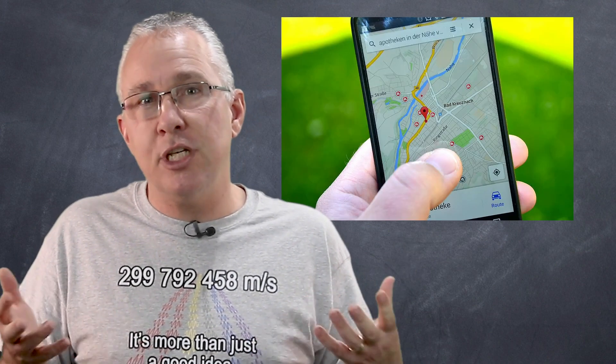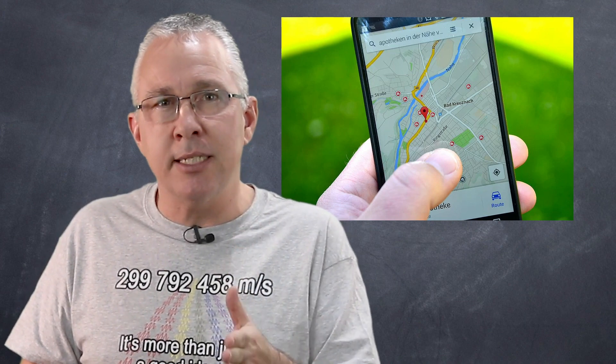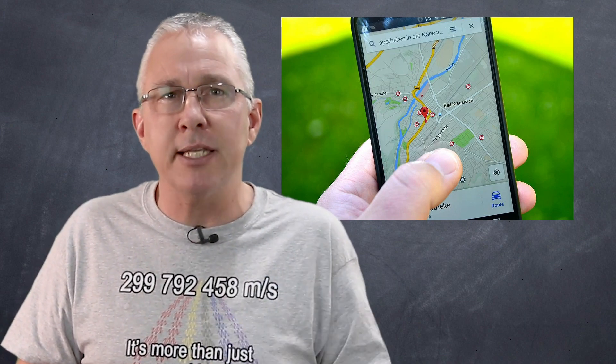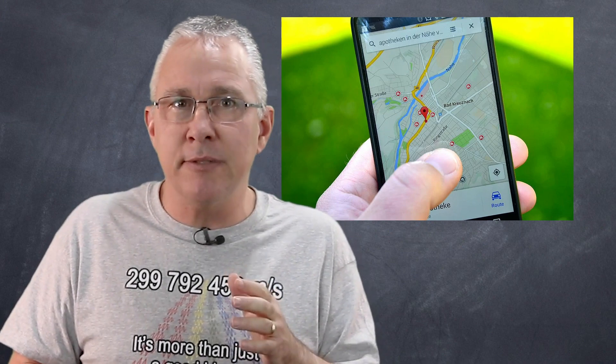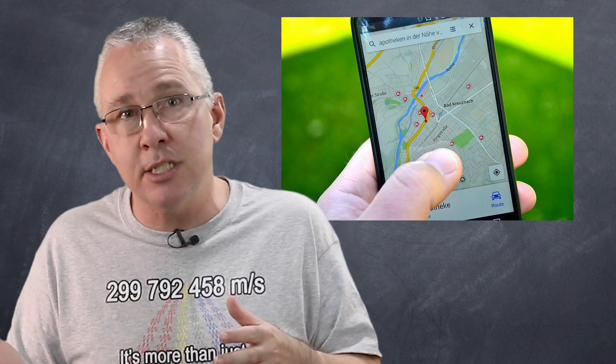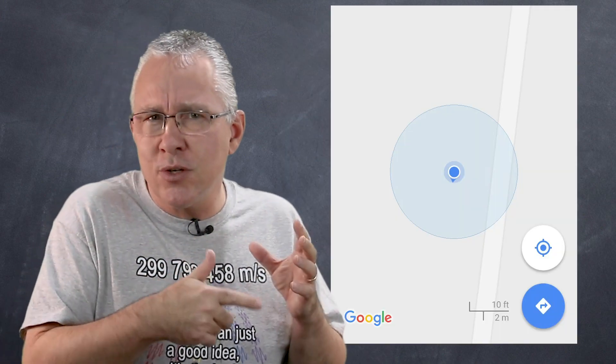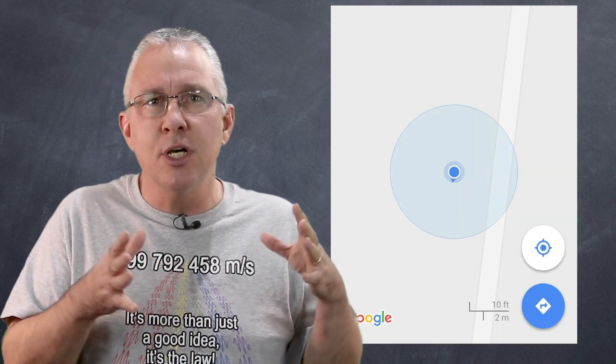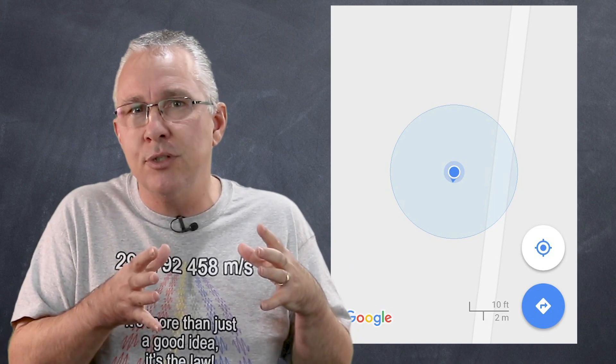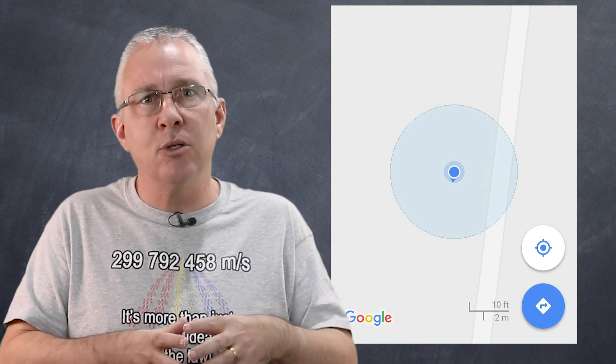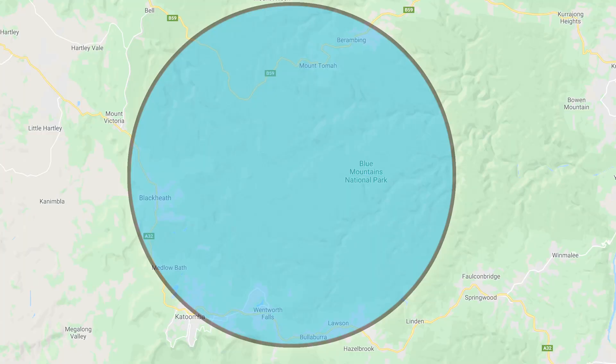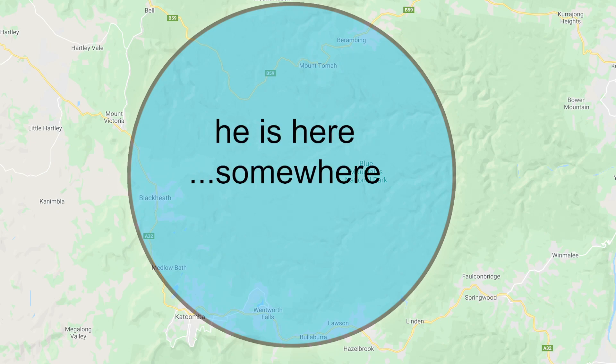But let's get closer to home. Your phone has GPS. The accuracy of the GPS satellites are dependent on that speed of light, so any uncertainty in the speed of light would result a greater uncertainty in your location that the GPS determines. So you know that circle that is often drawn on maps around your location, which shows the level of uncertainty of your determined location? Well, that circle will be much, much bigger if there was a greater uncertainty in the speed of light. That's not a great outcome if you're lost.